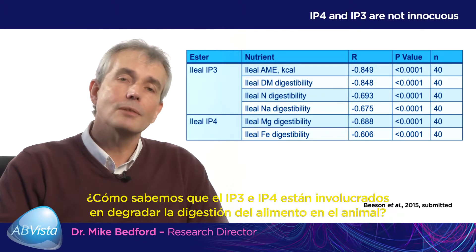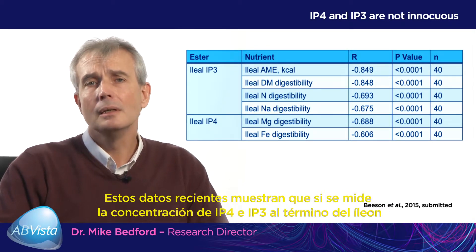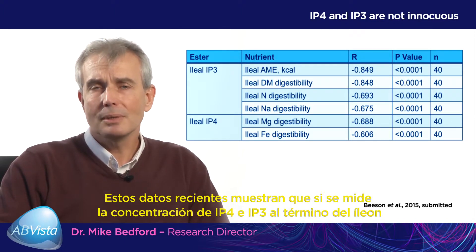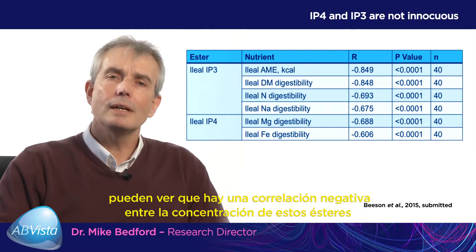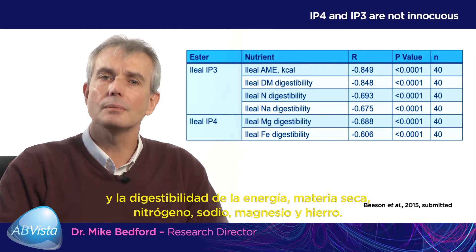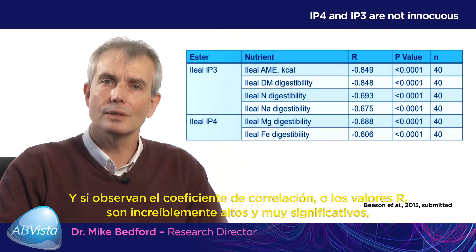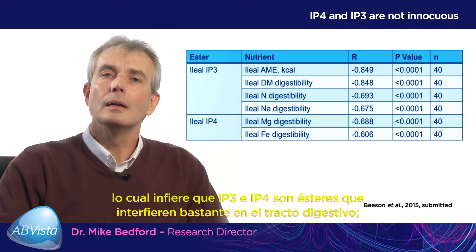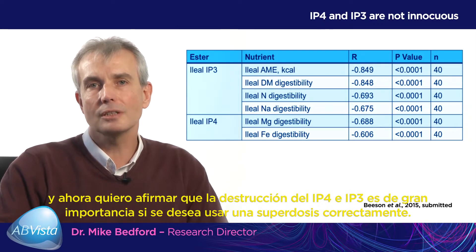How do we know IP3 and IP4 are involved in degrading the animal's ability to digest its feed? Recent data from six months ago shows that measuring IP4 and IP3 concentration at the terminal ileum in birds fed various levels of phytase reveals a very negative correlation between the concentration of these esters and digestibility of energy, dry matter, nitrogen, sodium, magnesium, and iron. The R values are incredibly high and very significant, suggesting IP4 and IP3 really are quite malevolent esters in the digestive tract — they are not innocuous. We have ignored these esters in the past, and today what I want to identify is that destruction of IP4 and IP3 is of great importance if you want to superdose correctly.